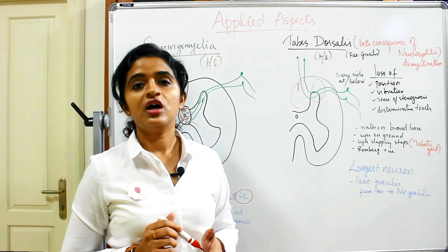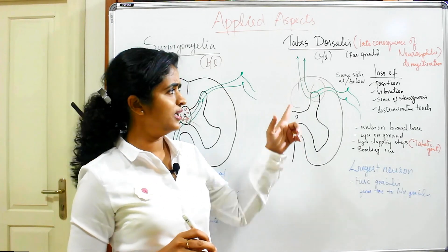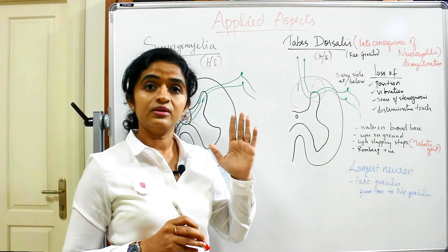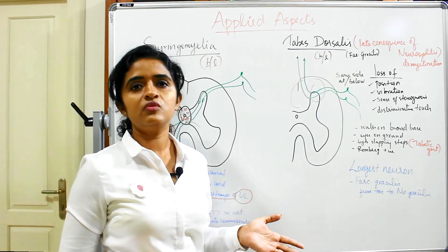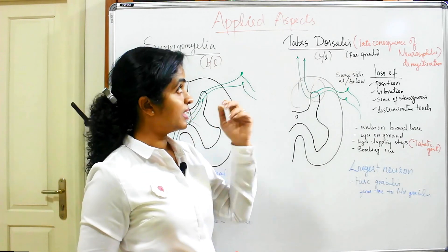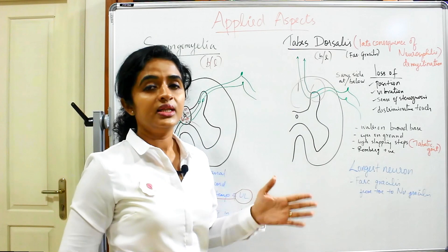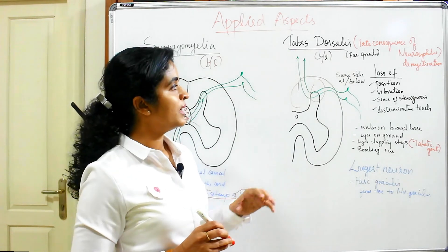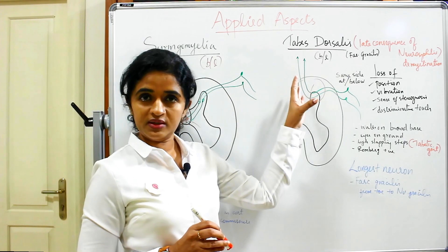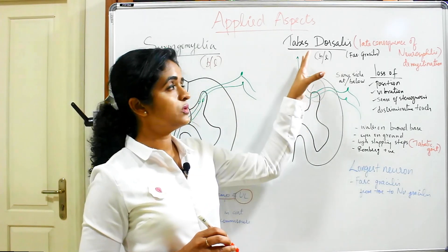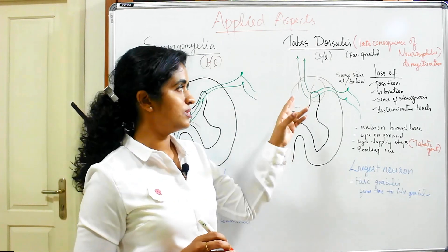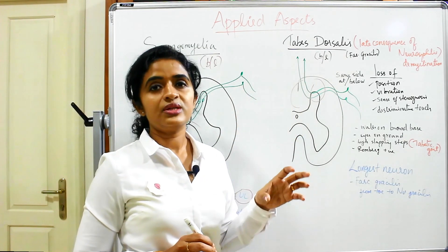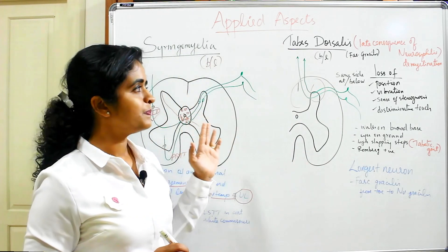In the posterior column we have two sets of fibers: fasciculus gracilis and fasciculus cuneatus. It is fasciculus gracilis which is more commonly affected, and that is why patients with tabes dorsalis have symptoms pertaining to the lower limbs. Although we say there will be a unilateral lesion initially, tabes dorsalis usually presents with bilateral representation because once one column is affected, it gradually affects the other posterior column as well.